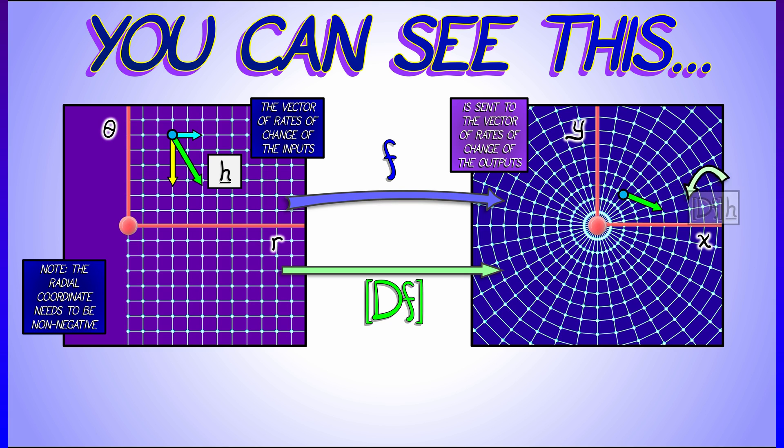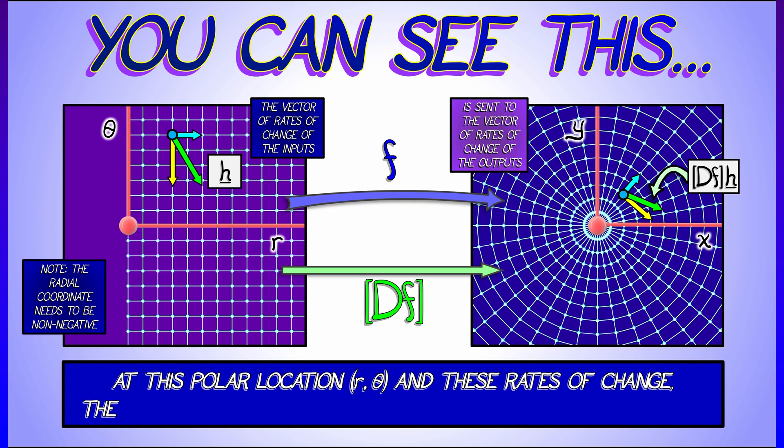And now f takes your input to a certain output, Euclidean coordinates x and y, df takes the vector h of rates of change of the inputs to a vector of rates of change of the outputs. And you can really see how that is obtained through a linear combination of the image of the basis vectors, the columns of the derivative matrix. Now at this particular location, at these rates of change, you can see that the rate of change of x is positive and pretty strong, and the rate of change of y is slightly negative. The geometry matches what we've done algebraically.